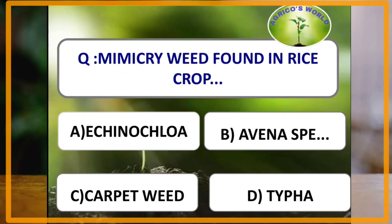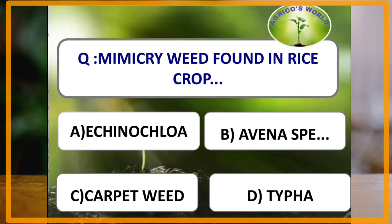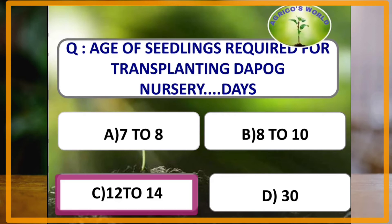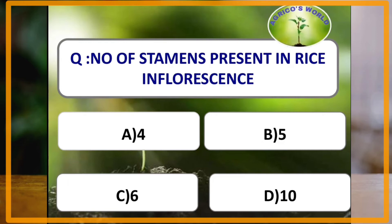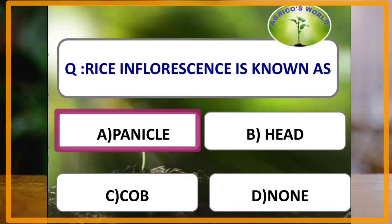The mimicry weed found in rice crop is Echinochloa. For transplanting in dapog nursery — which was developed in the Philippines — the age of seedlings required is 12 to 14 days. Rice inflorescence has 6 stamens. The rice inflorescence is known as a panicle, which is usually terminally produced.